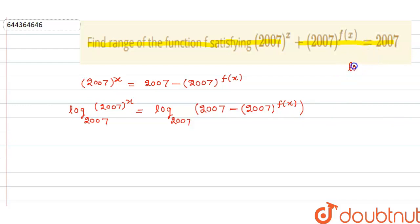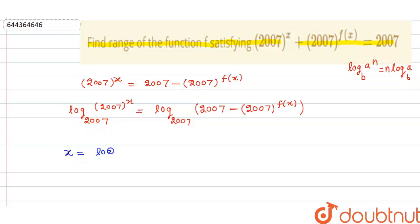Now apply the log property: log base b of a^n = n·log base b of a. So the left side simplifies: since log base 2007 of 2007 = 1, the left side becomes simply x. So we get: x = log base 2007 of (2007 - 2007^f(x)).